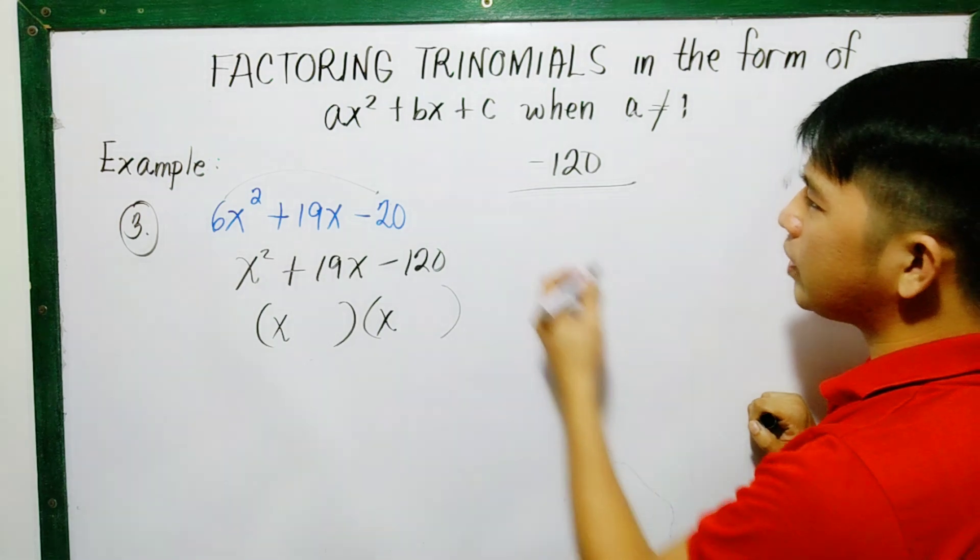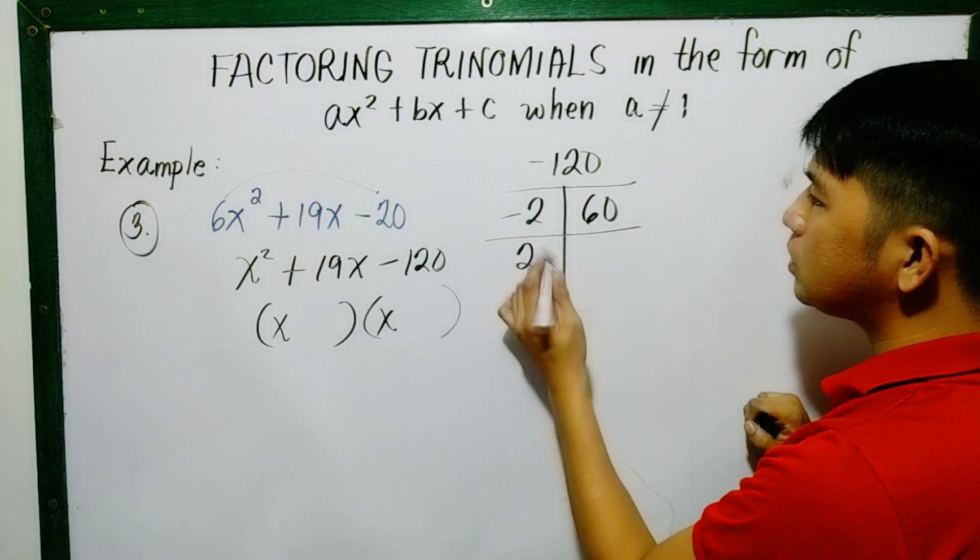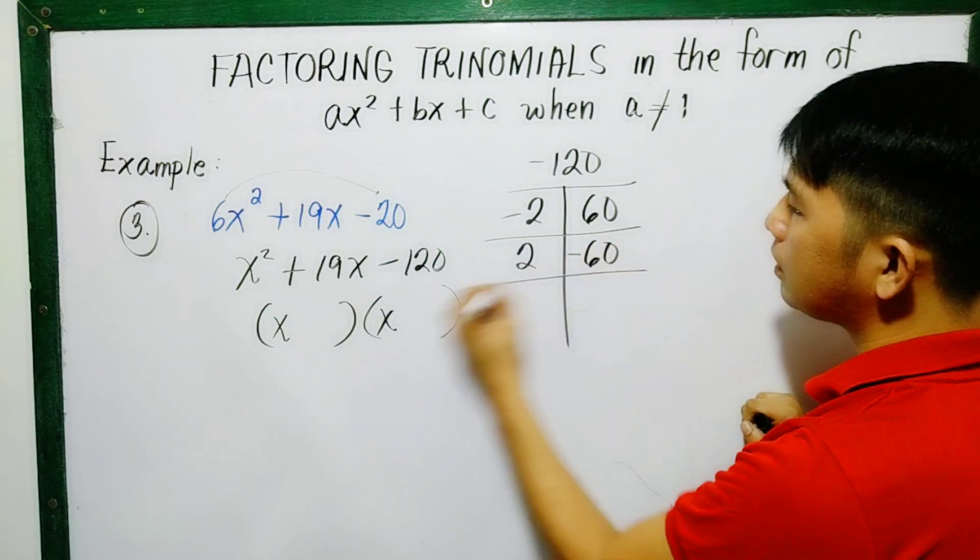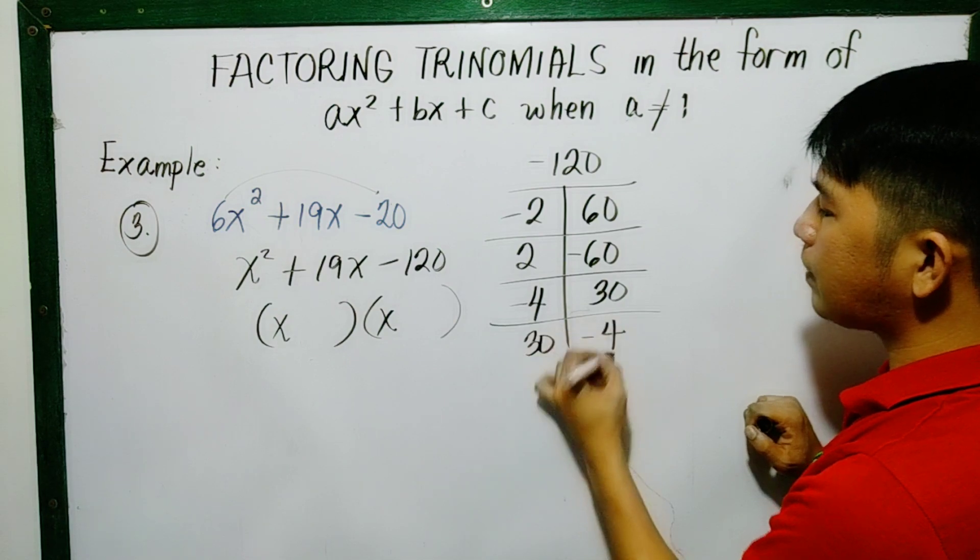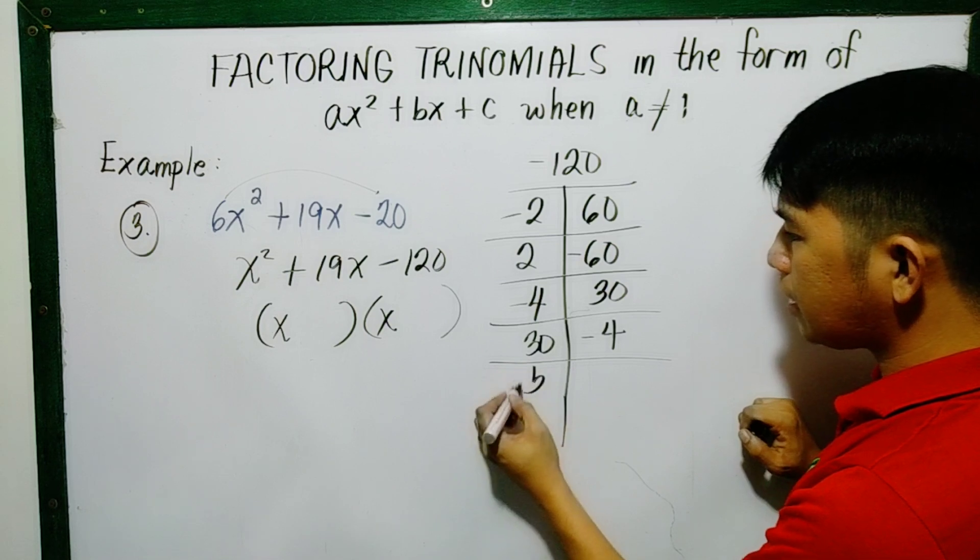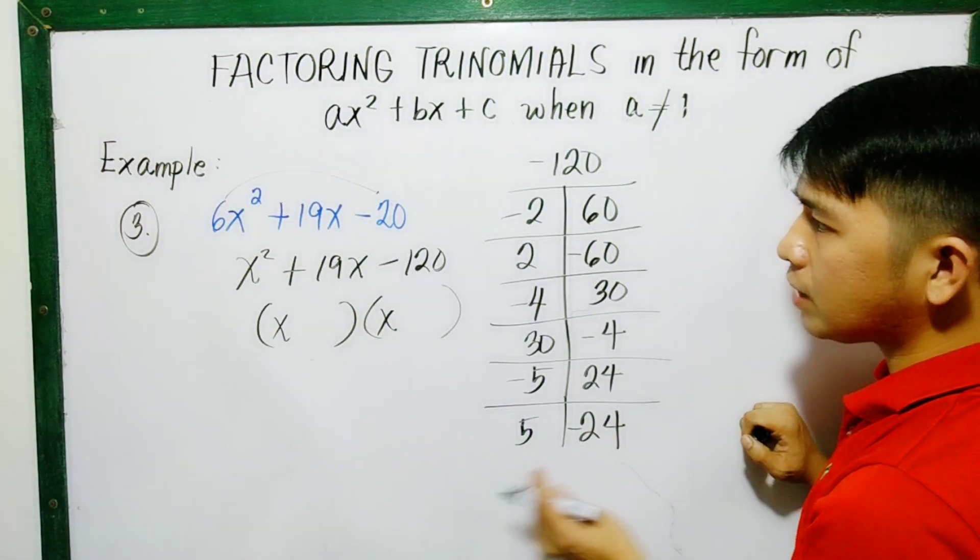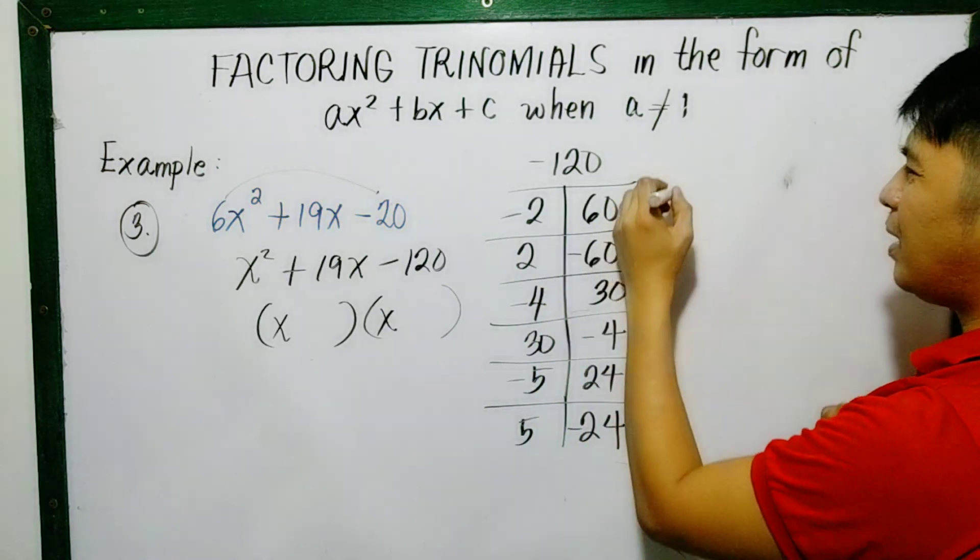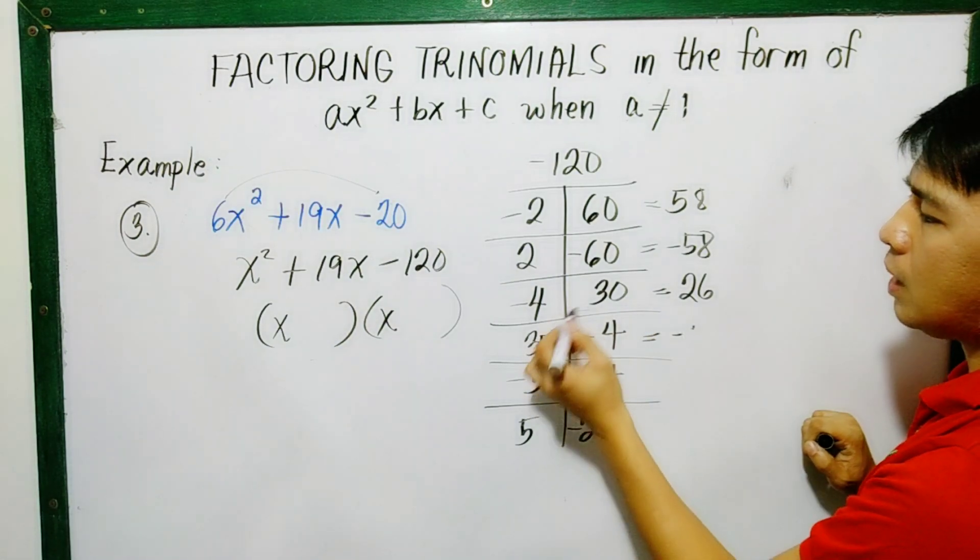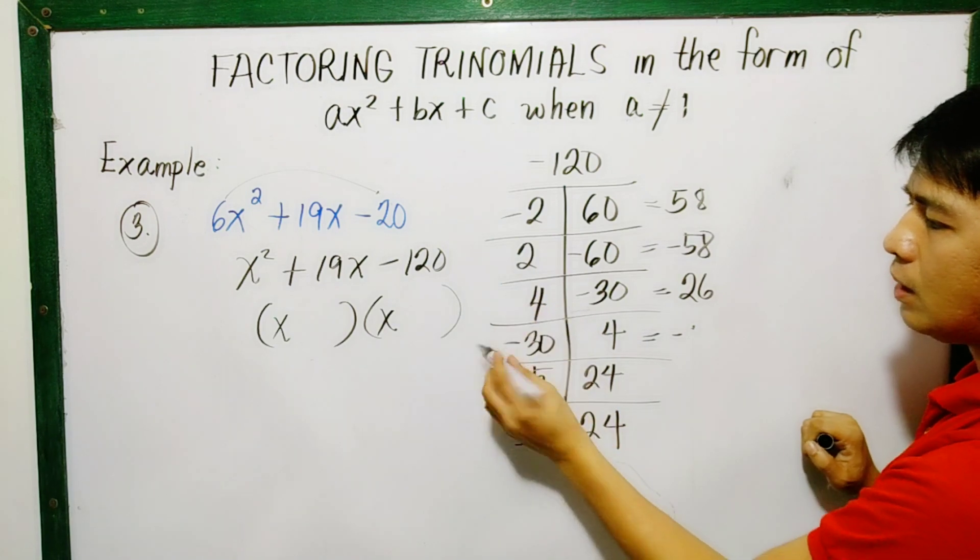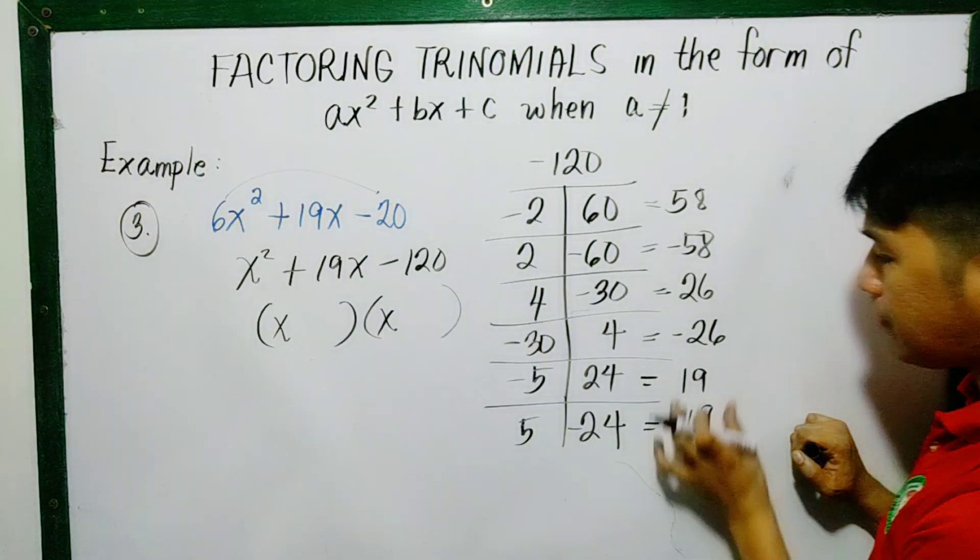So let's work on this. It could be, if we divide by two, there are 60. So this is negative positive. The other side is positive then negative. If we divide by 4, I have 30. So positive negative positive. Then this is positive negative. If we divide by 5, that is 24. So this is negative, this one is positive. Let's check if I'll get 19. So this is 58, this is negative 58, no. This is 26 negative. This is negative, this is positive. So negative 26. This is positive 19, this is negative 19. So the middle term is positive 19, so we'll use this. So we will have negative 5 and positive 24.